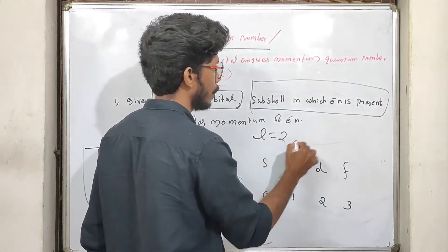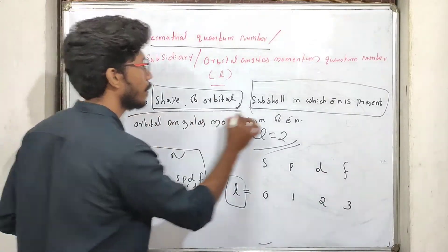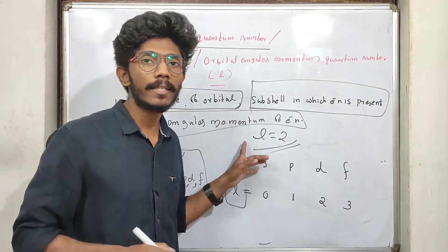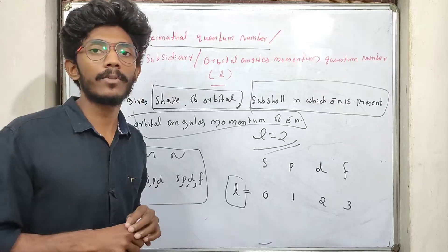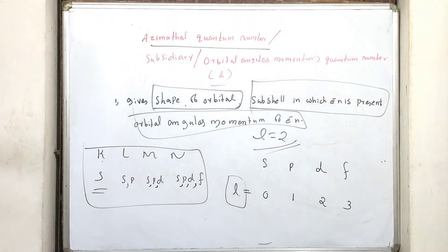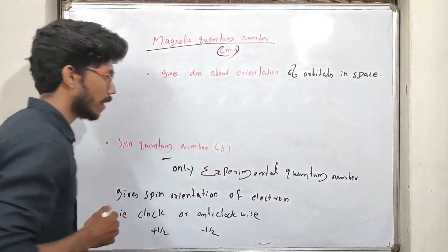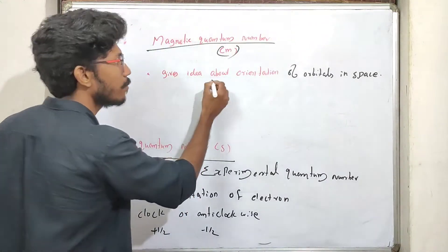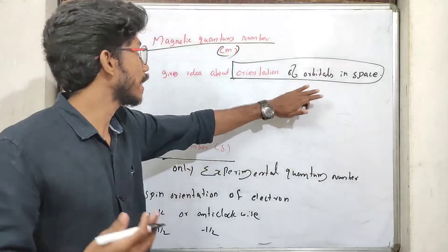This gives the sub-shell in which the electron is present. The value of l is given. The third point is the angular momentum of the electron. Now we have to discuss the main parameters. The values are n, l, m, and spin — these are the main parameters. It gives the orientation of the orbital.